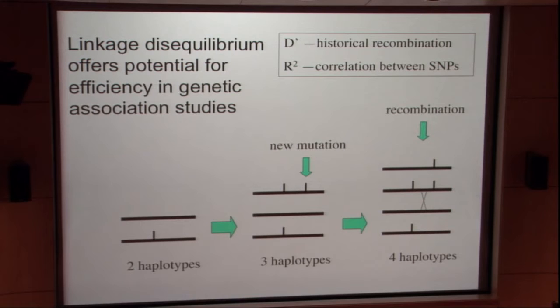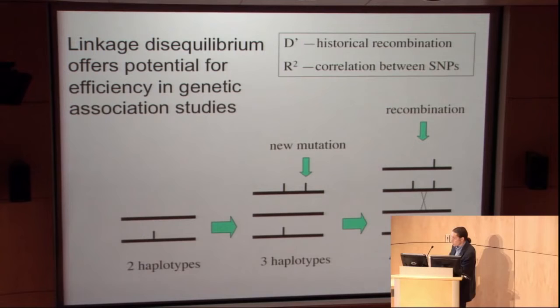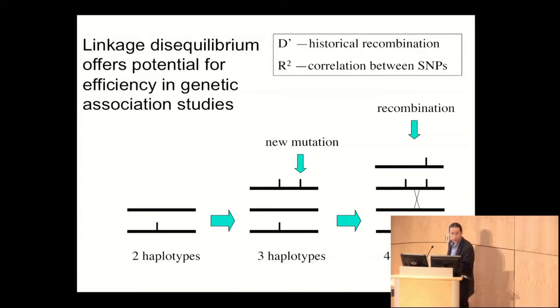The concept of linkage disequilibrium is a powerful one for gene mapping. When a new mutation arises, it will always be found with other nearby mutations that had arisen previously — because this is the chromosome on which it arose — unless and until a recombination happens at some point in between those two sites. When two sites are very close together, recombination is infrequent because in each generation you expect only about one recombinant every hundred megabases of DNA. If a mutation and a polymorphism are a few kilobases apart, it could take hundreds of generations — or may never occur — that a recombination intercedes between those two sites.